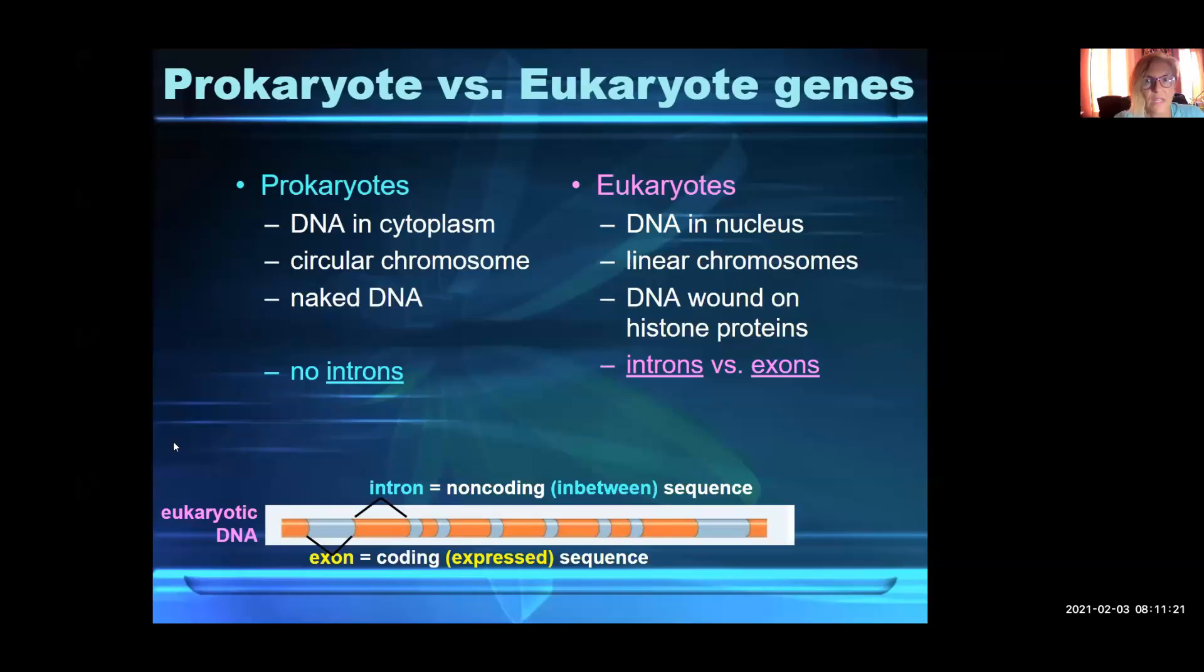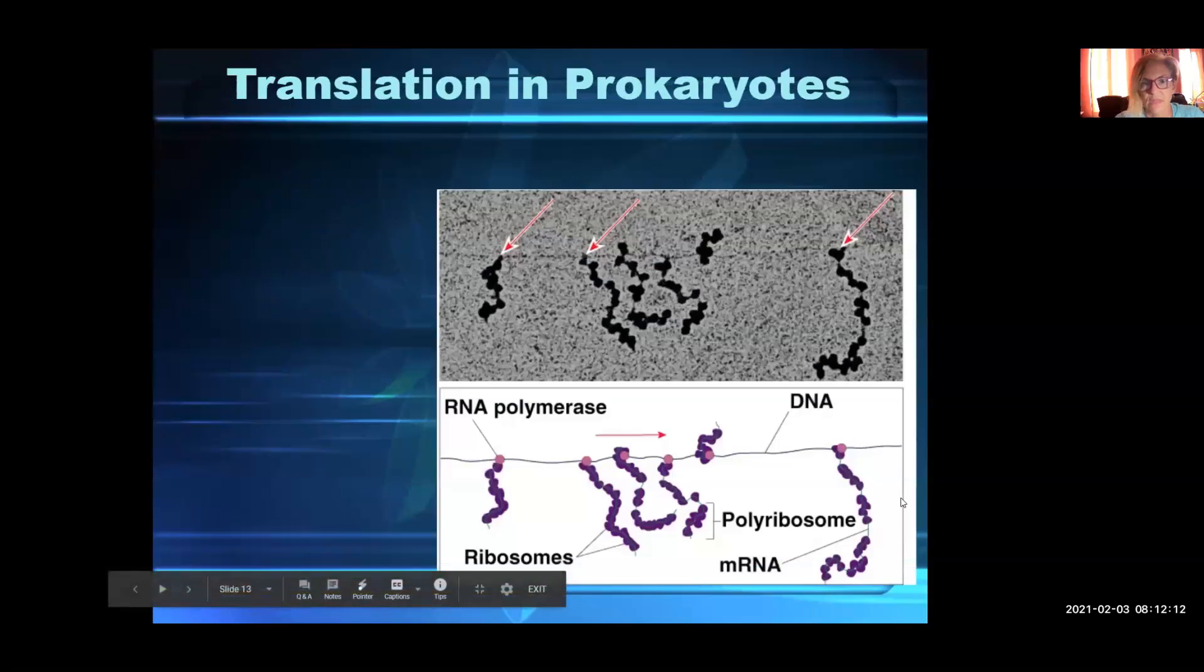Some differences here. Prokaryotes—the DNA is actually in the cytoplasm rather than the nucleus, right? The DNA is in a circular single chromosome rather than the eukaryote which is long, linear, and multi. The prokaryote is a naked DNA. One of the videos you'll see what I mean by DNA wound on histone proteins. Prokaryotes don't have any of those introns, those pieces of non-coding information. So when you read a prokaryote gene, you don't have to process that mRNA, whereas in the eukaryote you do. You have to excise those introns so that you're only reading the exons.